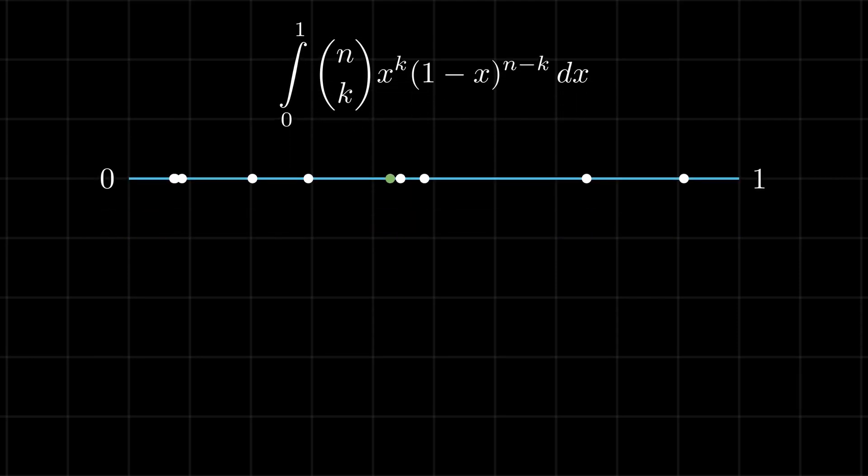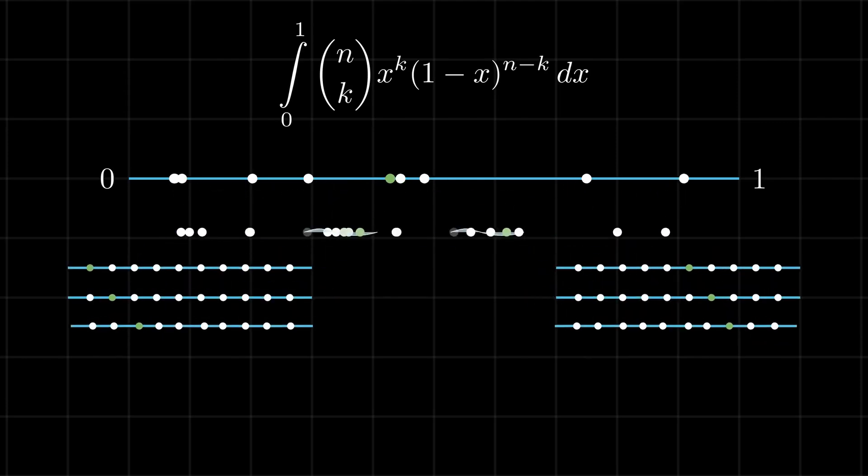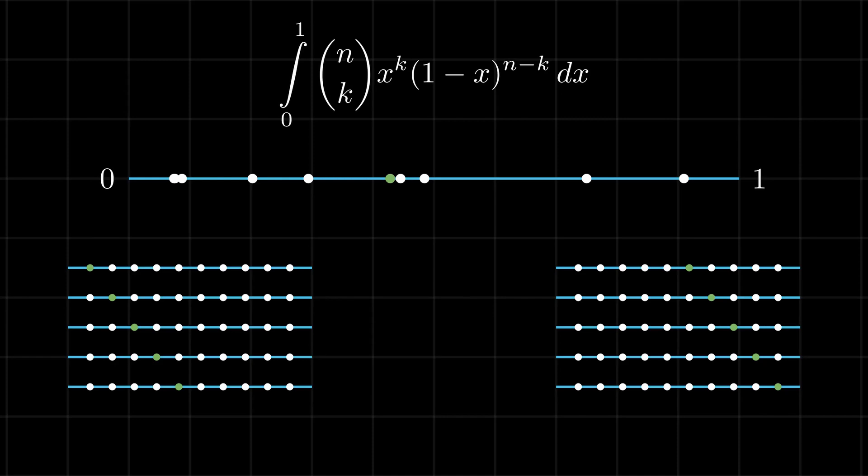Alternately, this probability can also be obtained by simple counting. If we look at the final ordering of the points, then the green point could have been the first, or the second, or the third, and so on, with all of its positions in the order equally likely.